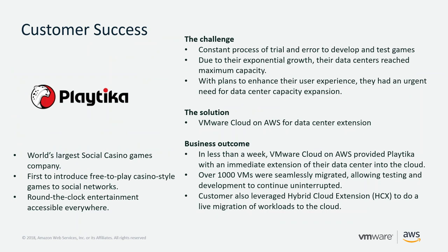For customer success: Platica, the world's largest social casino games company, faced challenges with constant trial-and-error game development and data centers reaching maximum capacity due to exponential growth. They needed urgent data center capacity expansion. Their solution was VMware Cloud on AWS for data center extension. In less than a week, VMware Cloud on AWS provided Platica with an immediate cloud extension — over 1,000 VMs were seamlessly migrated, allowing testing and development to continue uninterrupted. They leveraged Hybrid Cloud Extension for live migration of workloads to the cloud.